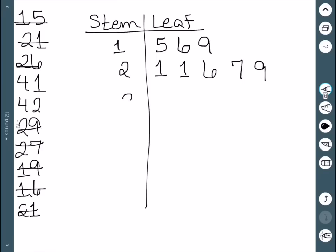We don't have any 30s, but however, we still write a three. We don't want to skip stems. After that, we have a four, where we have a 41 and a 42. And you'll often see some kind of key that says something like 1 bar 5 is equal to 15, just to show you that there's no decimals or anything involved in this particular plot.